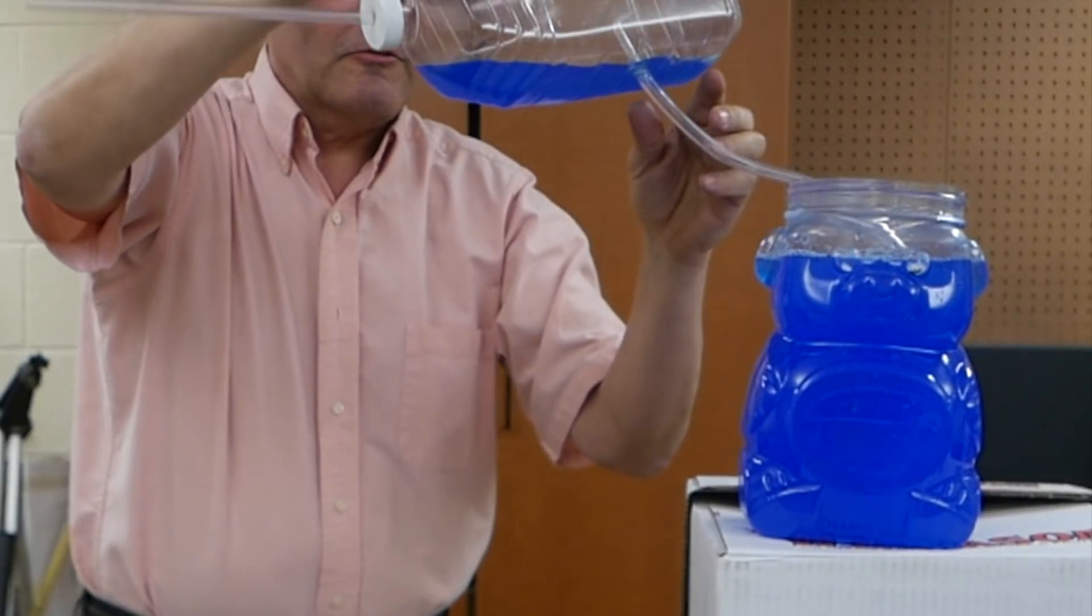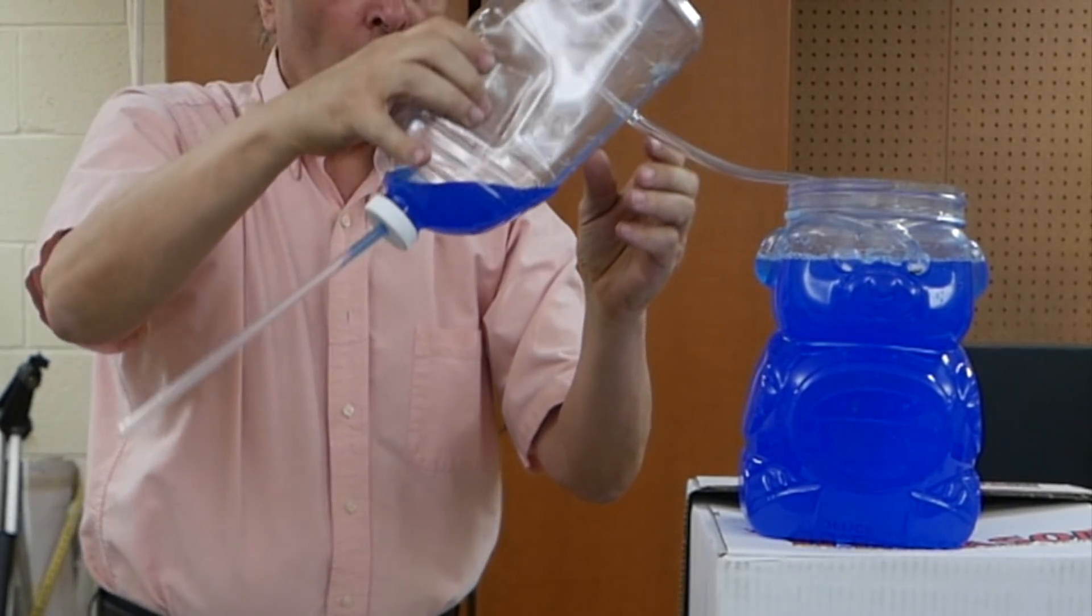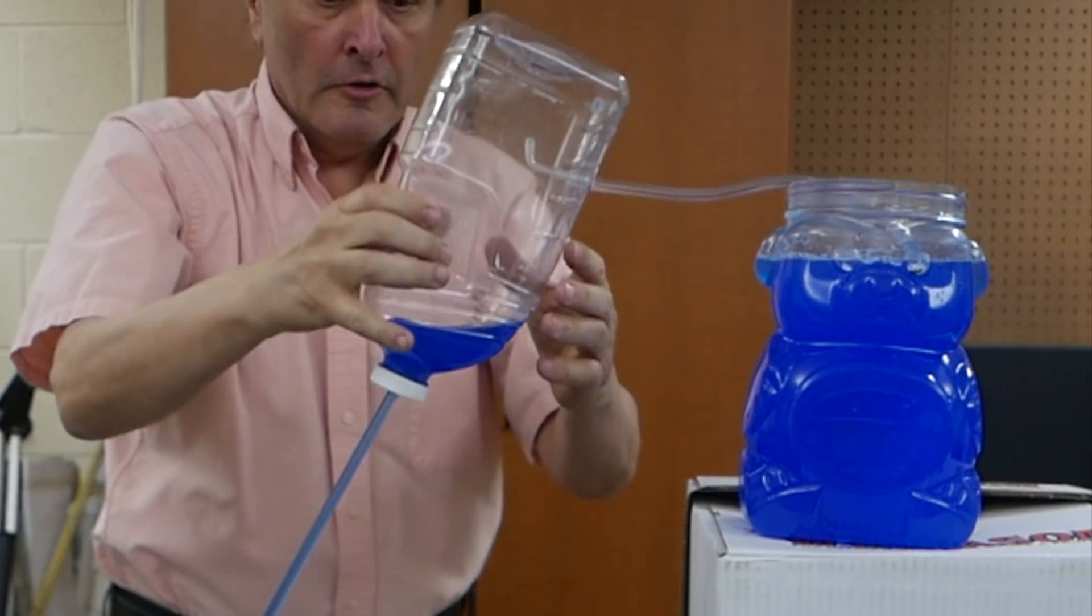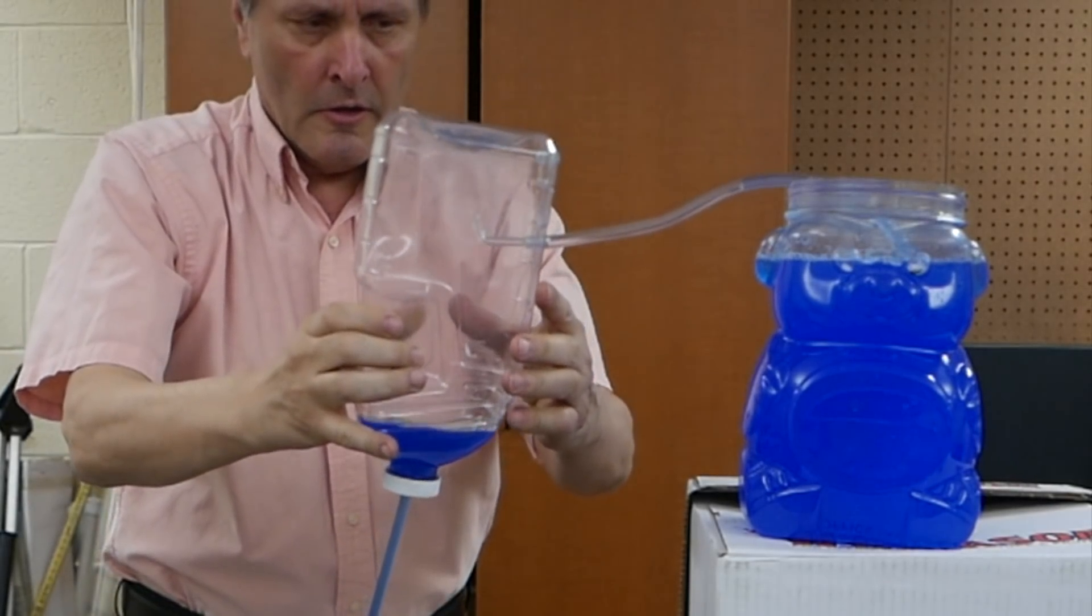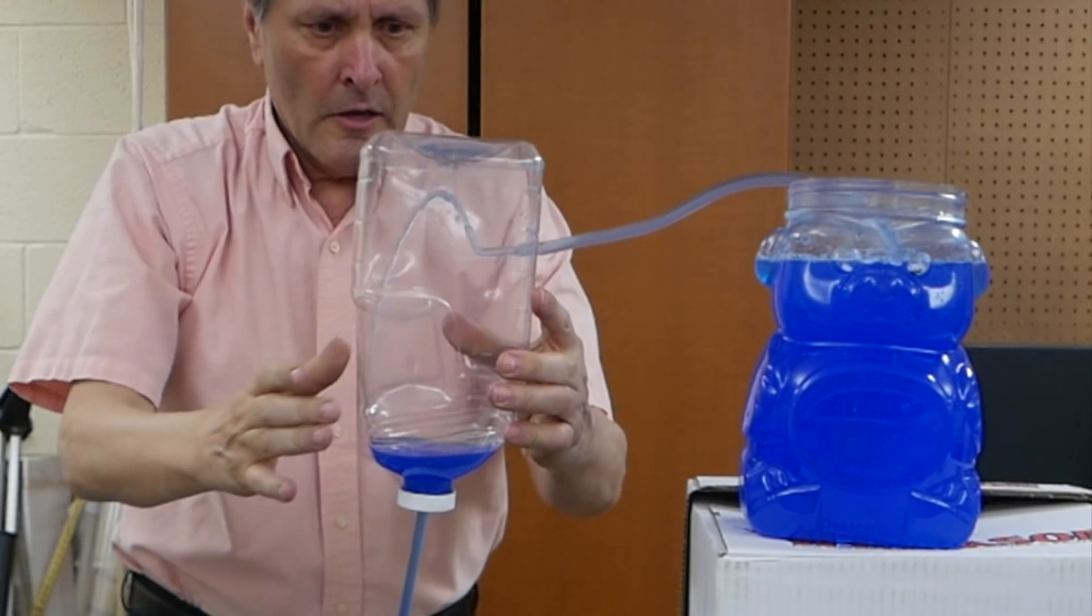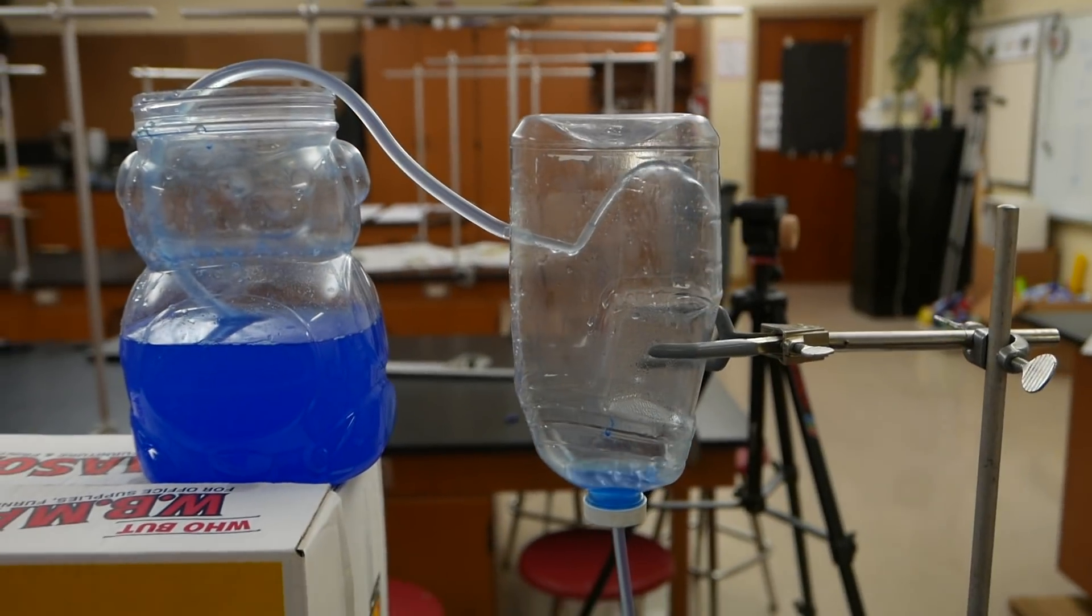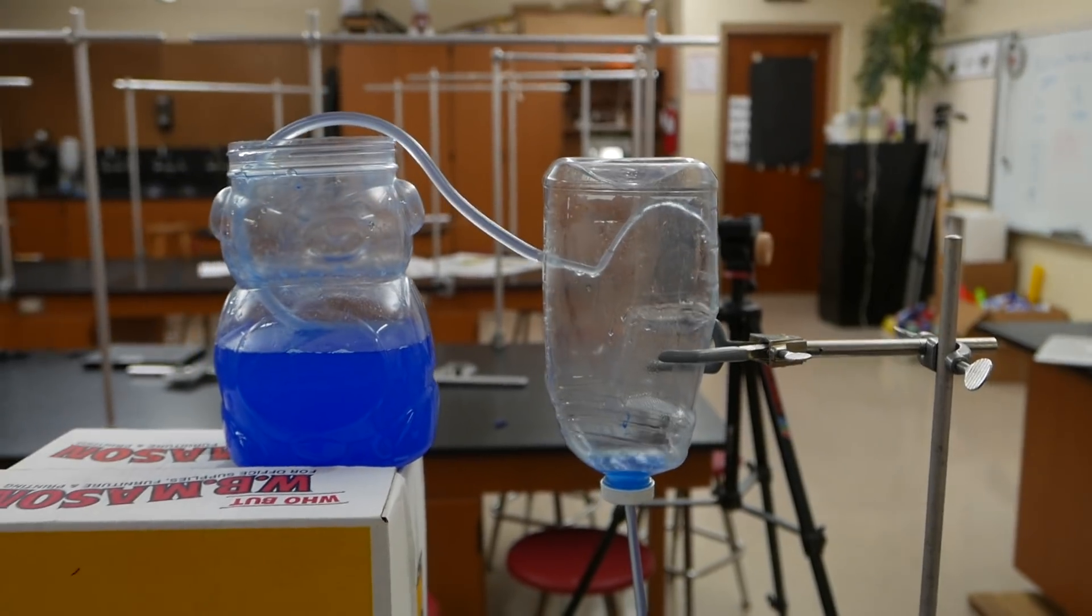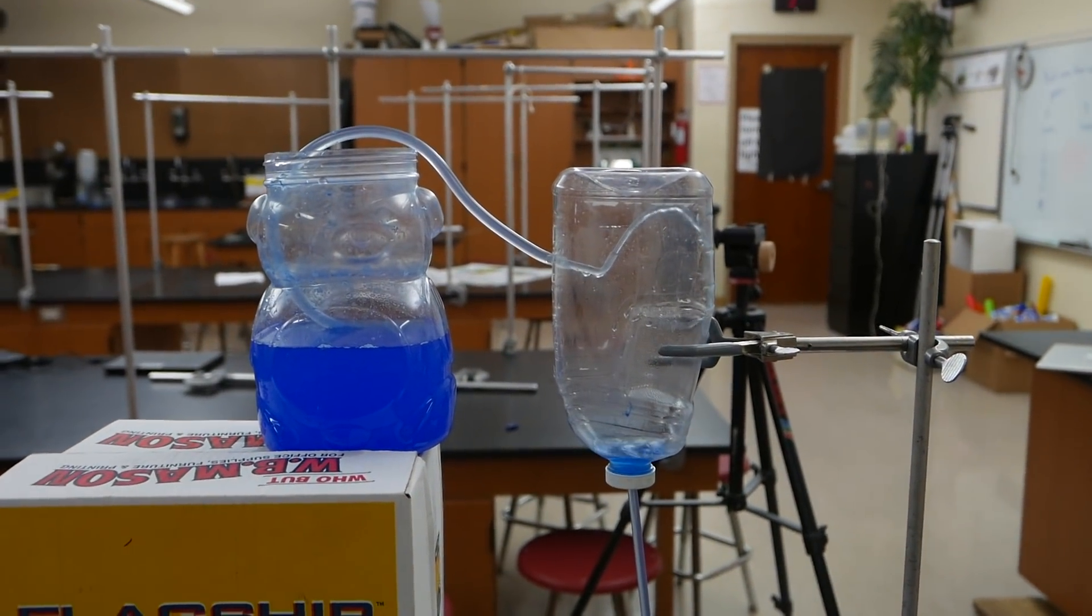Notice that the siphon hasn't started yet. A small amount of water will drain out that lower tube, which will decrease the pressure inside the bottle, and then the siphon will start.